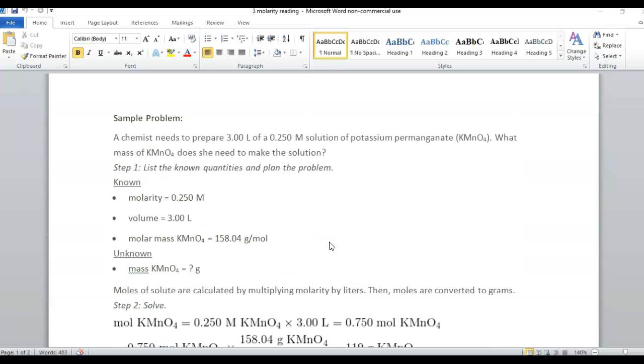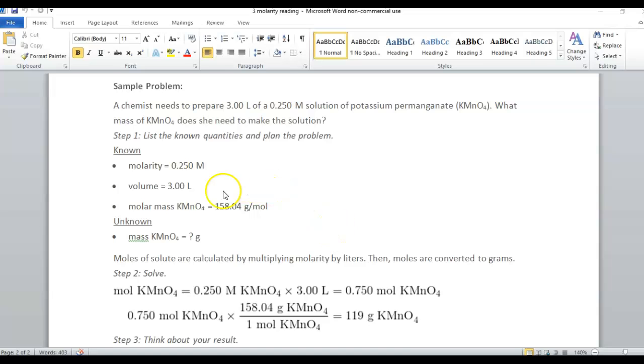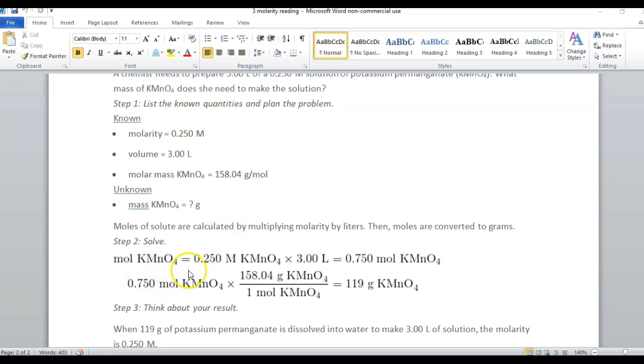The next page has another sample problem. Notice we have three significant digits. Here we have five, so our answer should be rounded to three significant digits. Setting up the problem, we find that we have 0.750 moles potassium permanganate. We use moles times the molar mass to get the desired variable, grams.